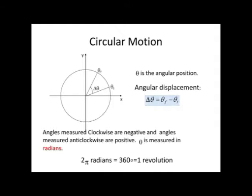So its angular position will be 90 degrees or pi by 2. If we consider this for a small time interval, suppose at any instant the position lies at an angular position theta initial, and after a small time interval, it moves to the angle theta final. Their difference, theta f minus theta i, which is delta theta, is called angular displacement. In clockwise direction, delta theta is taken as negative, and in anticlockwise direction, delta theta is taken as positive. And for one complete revolution, it has the value 360 degrees or 2 pi.